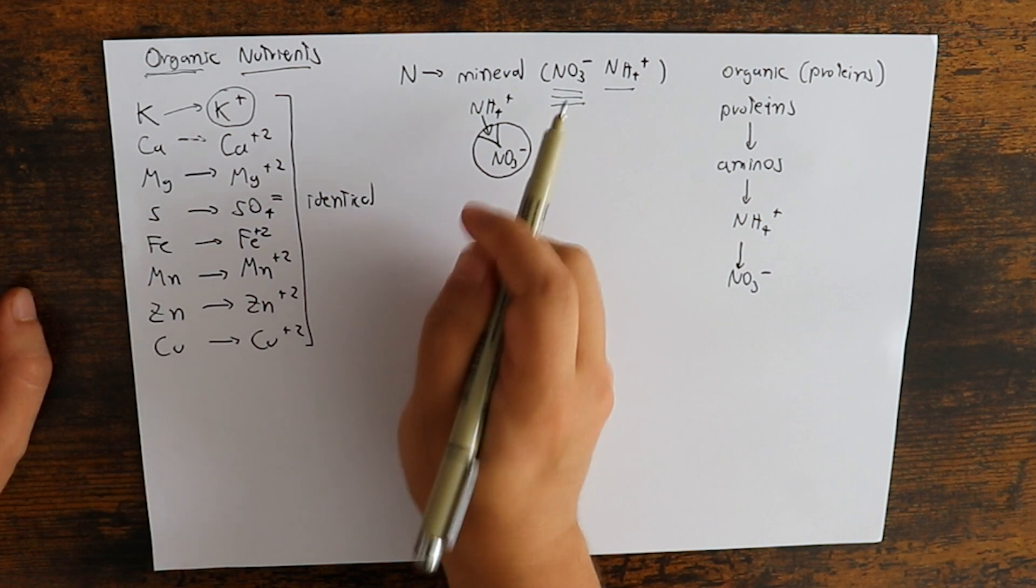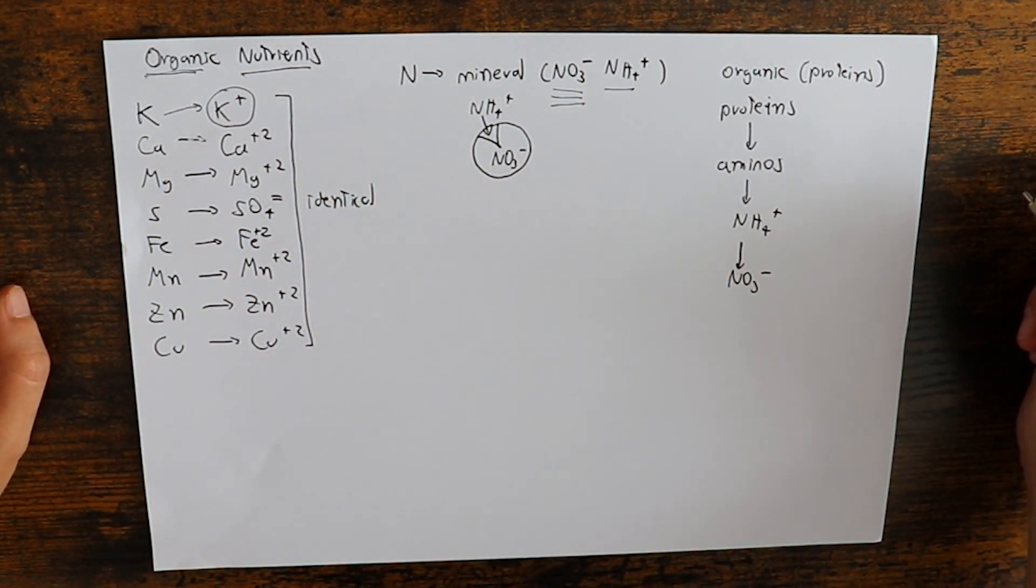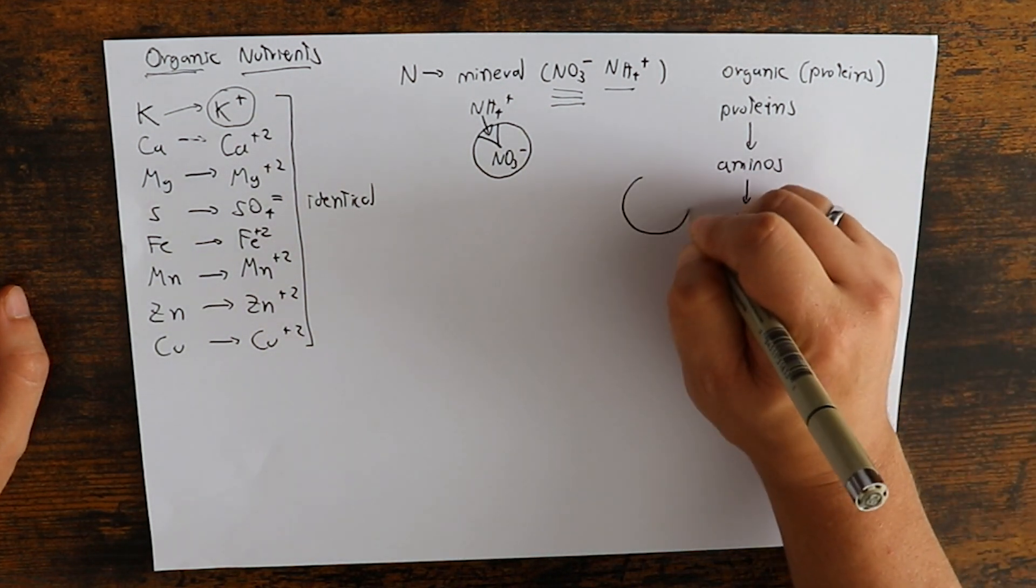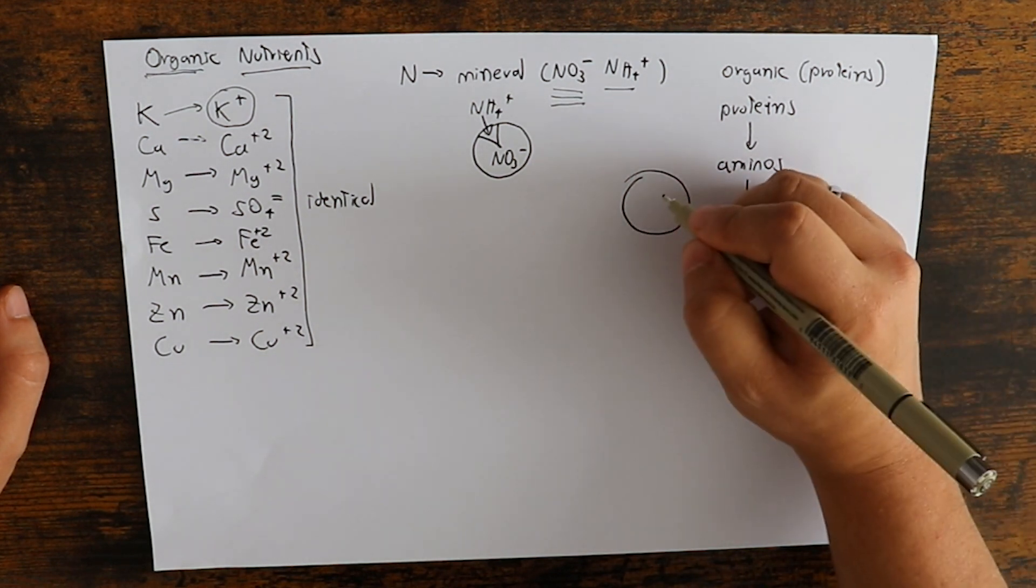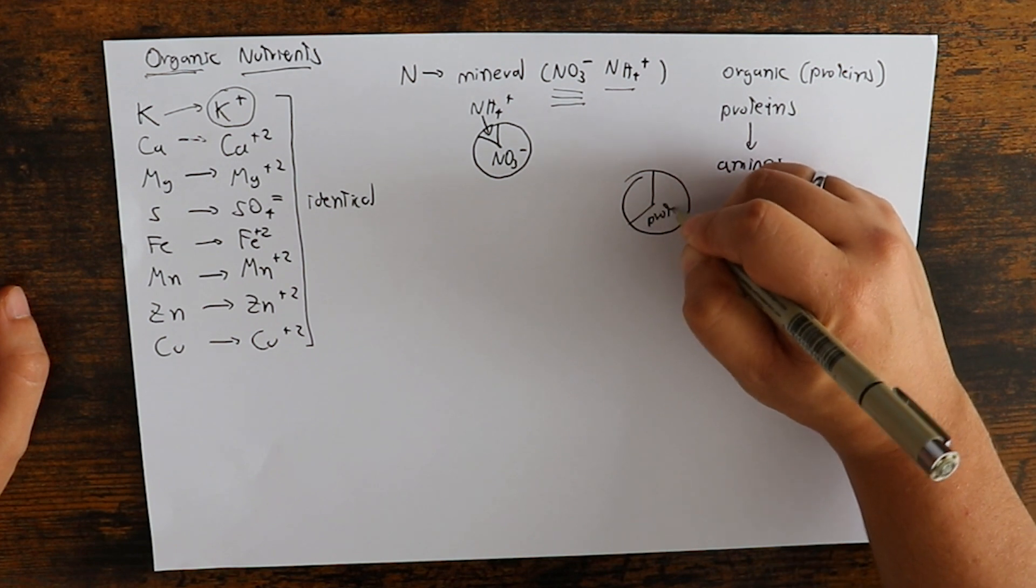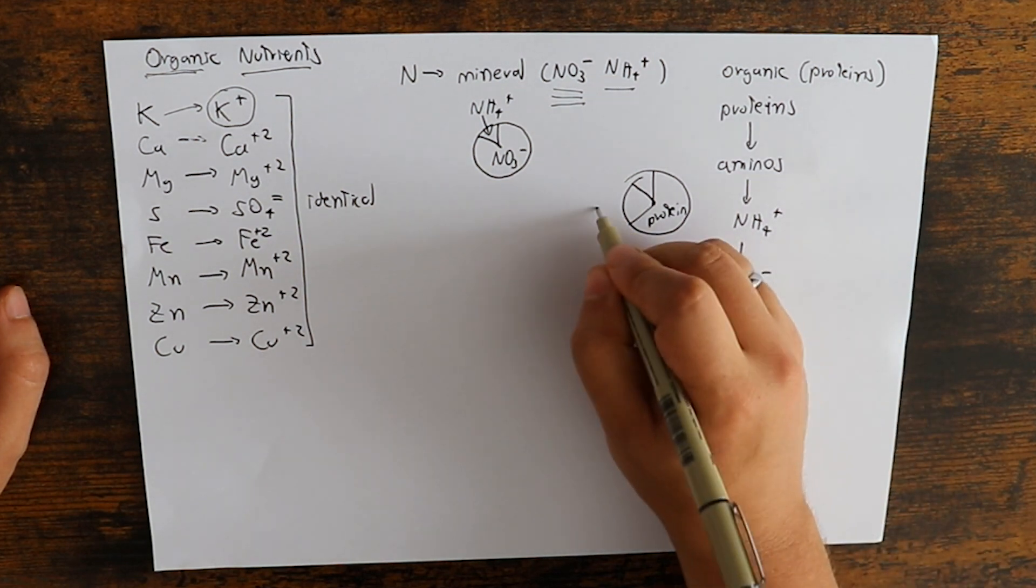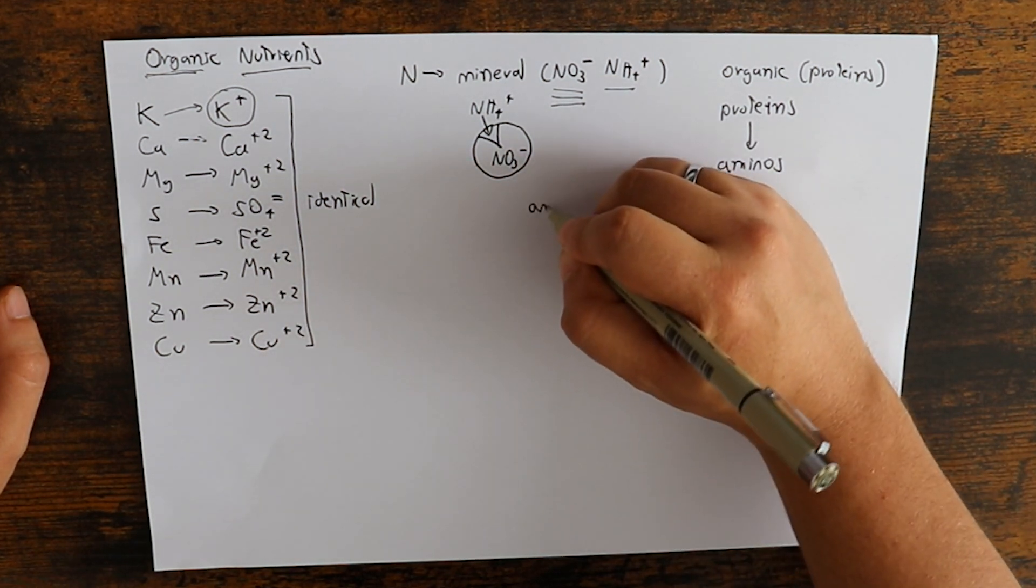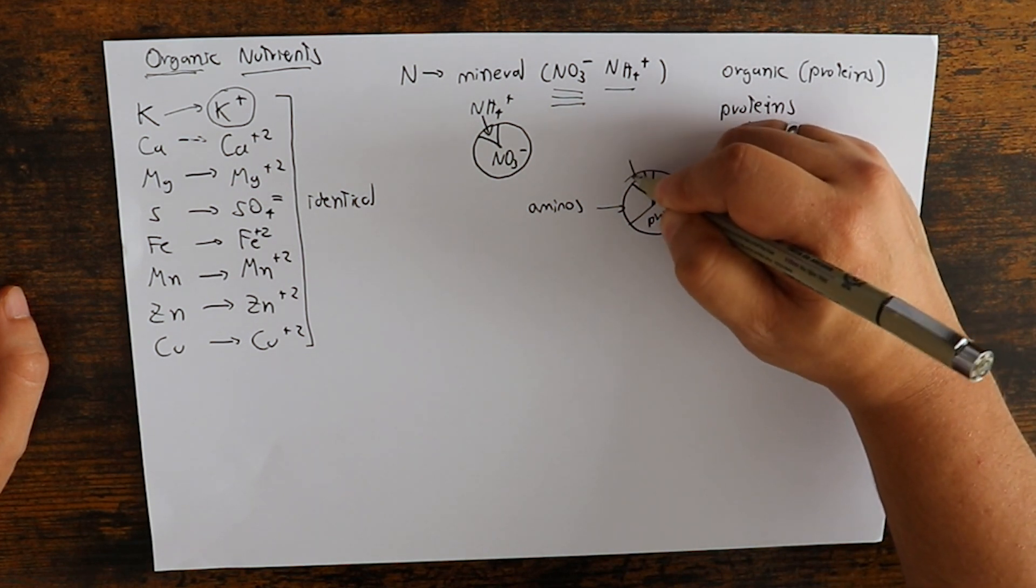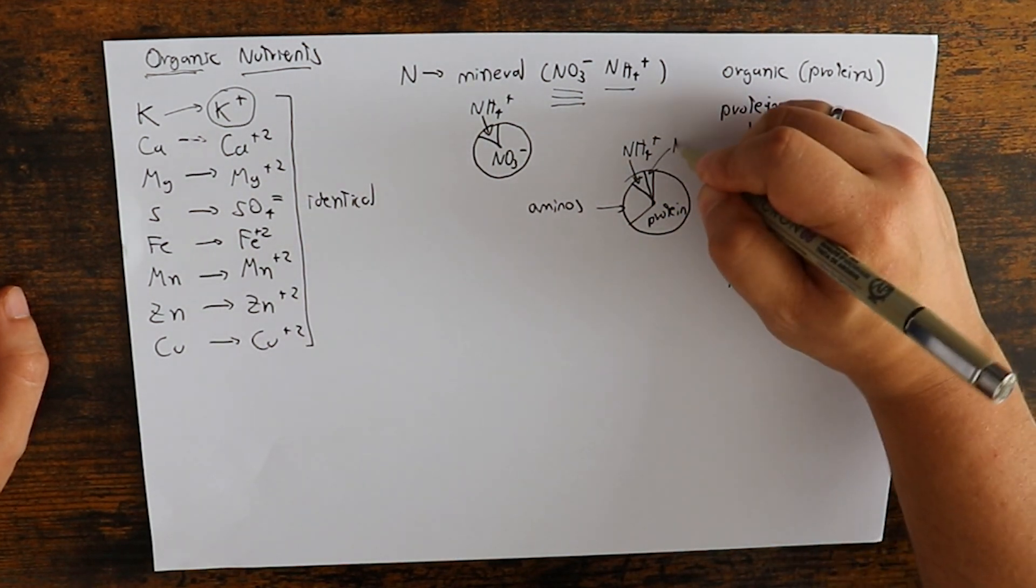So in the end this nitrate and this nitrate are exactly the same and this ammonium and this ammonium are exactly the same, but the distribution is very different. In the distribution of an organic solution, we will have most of the nitrogen will usually be protein and then we have most of the remainder, this thing will be aminos. Then we will have a very small amount as ammonium.